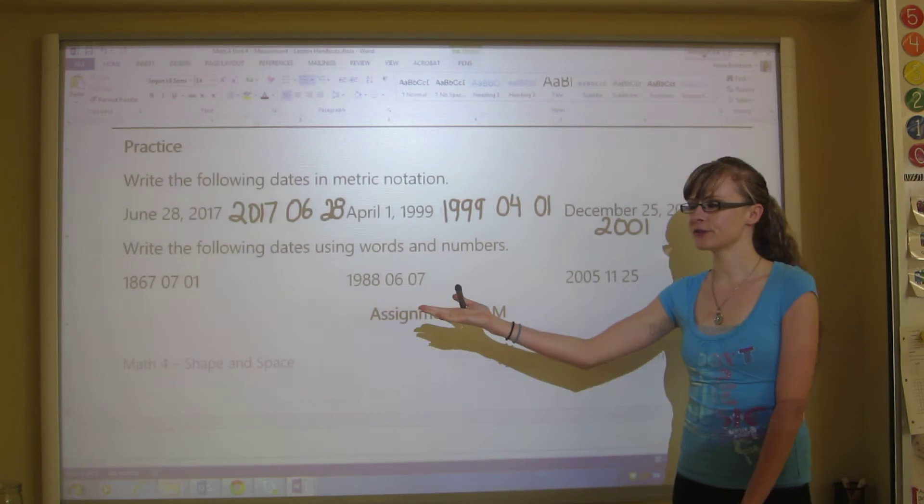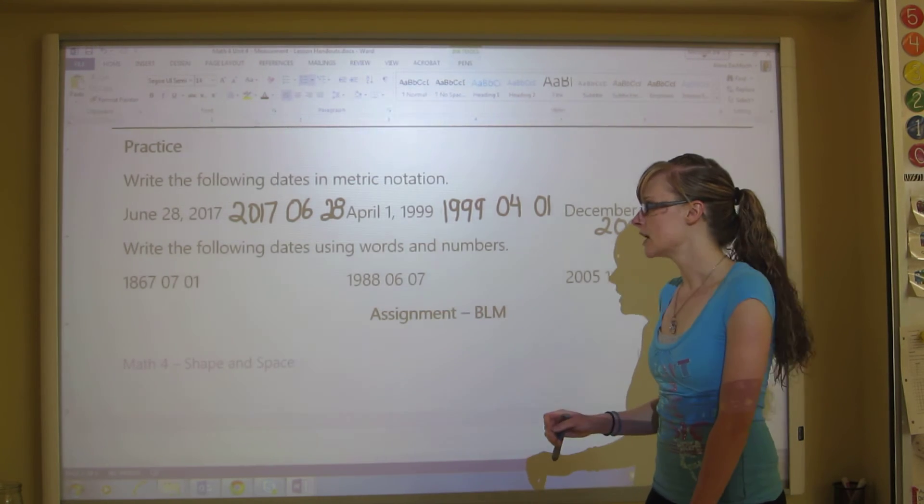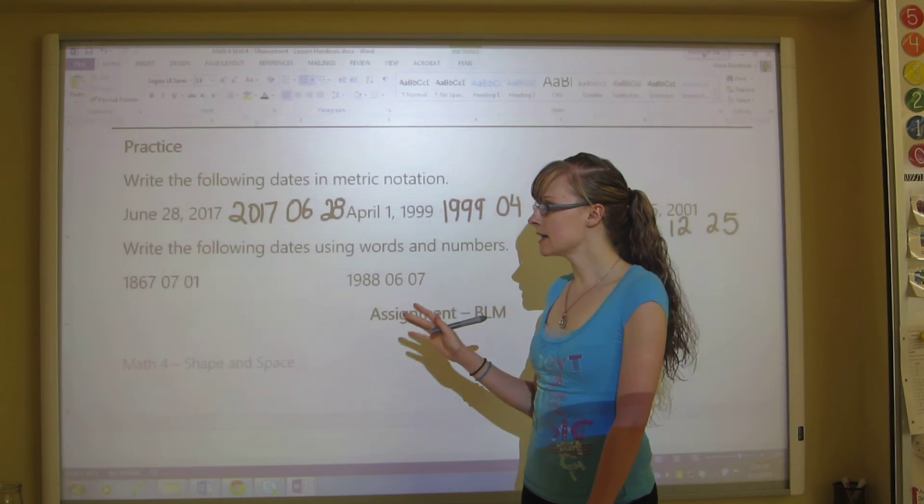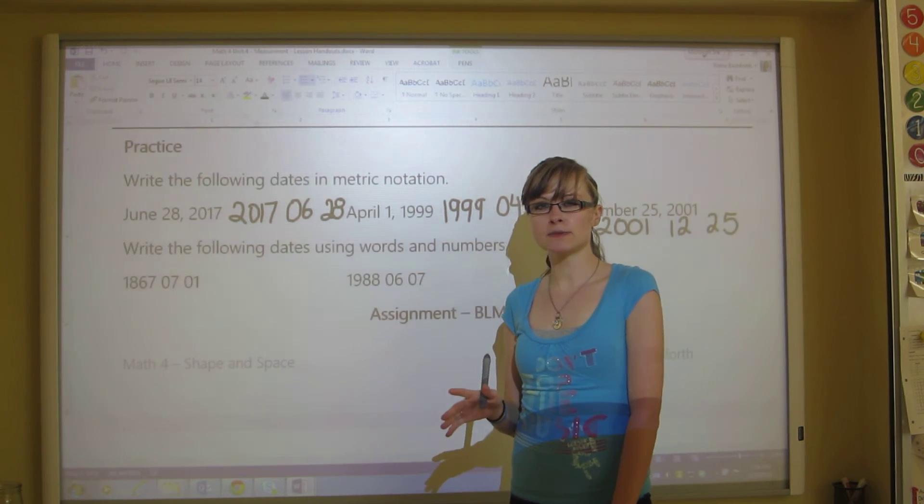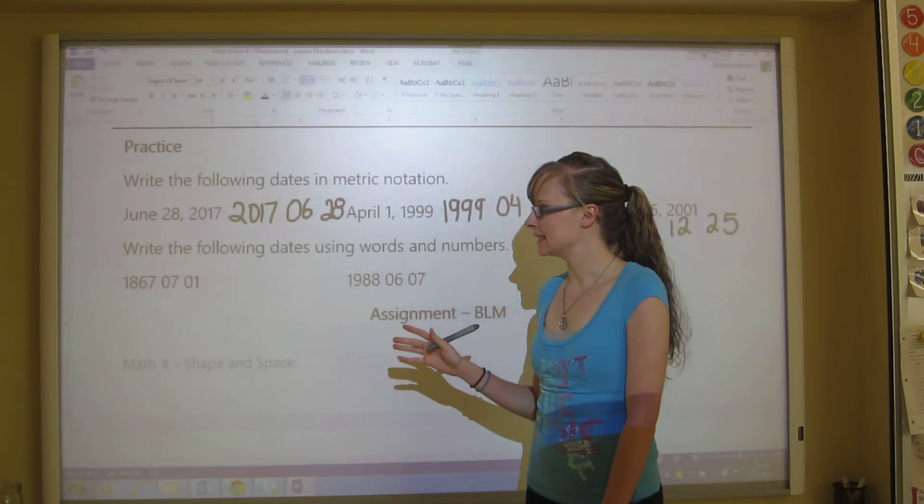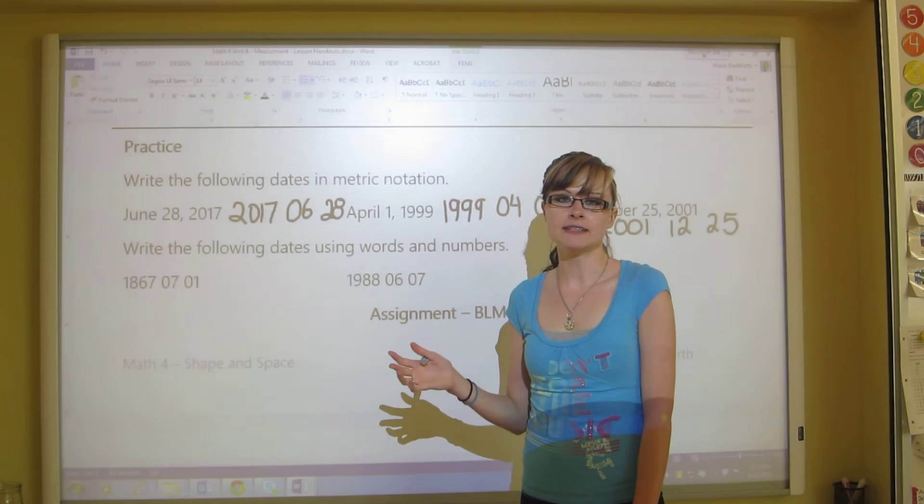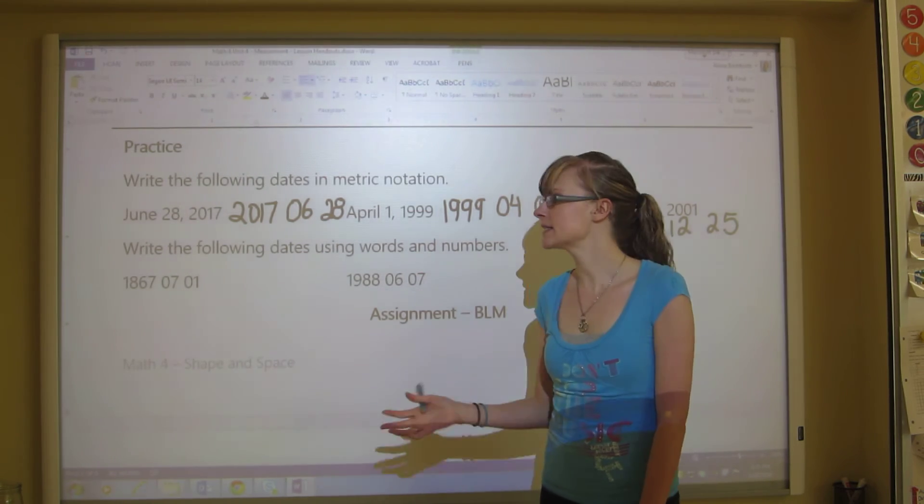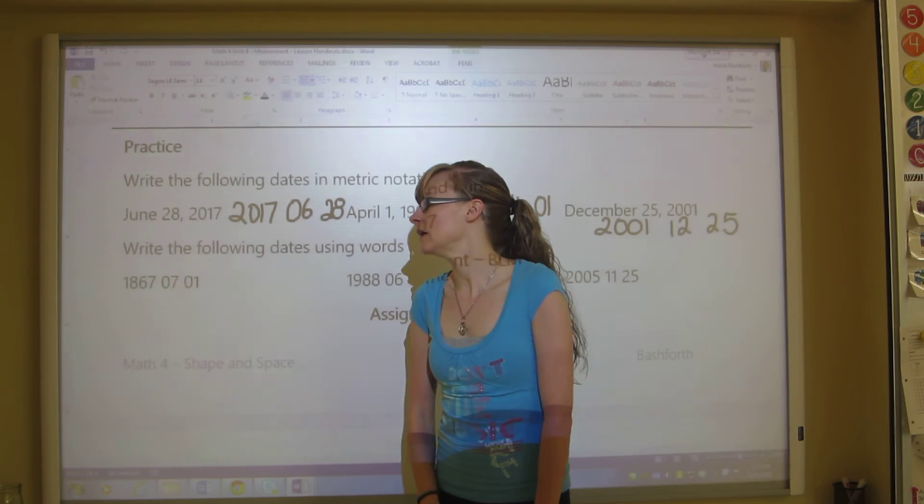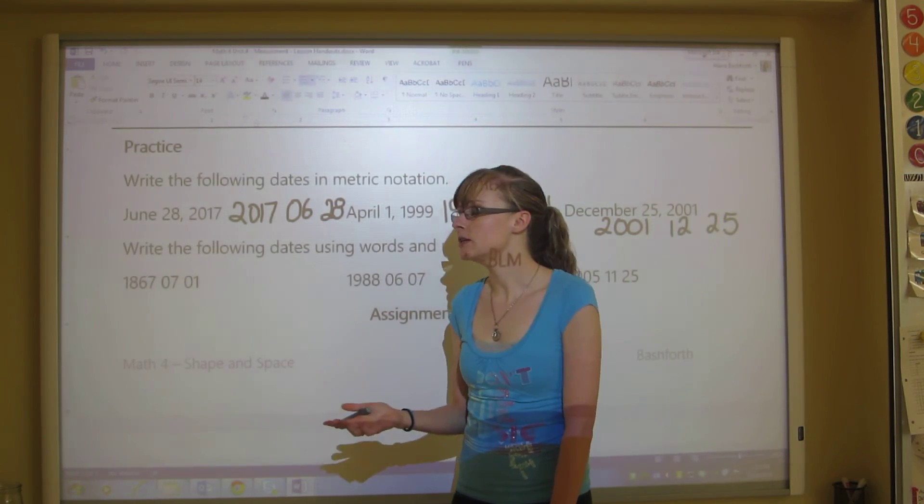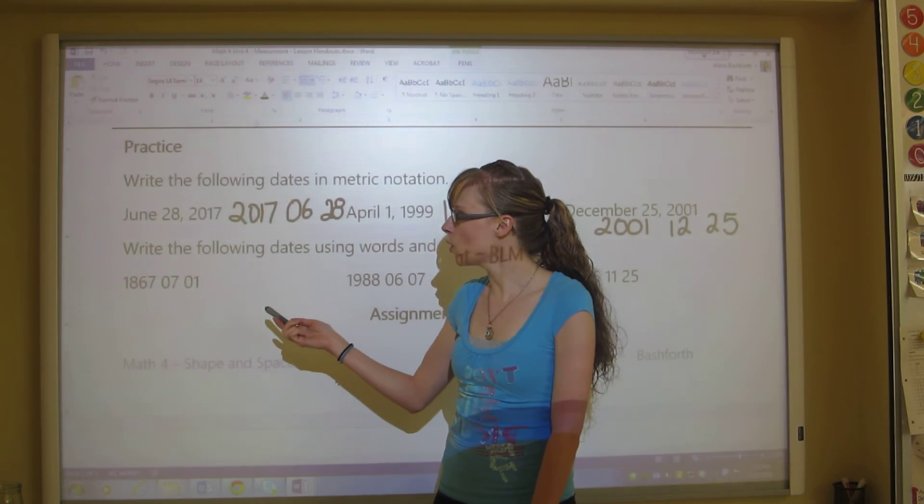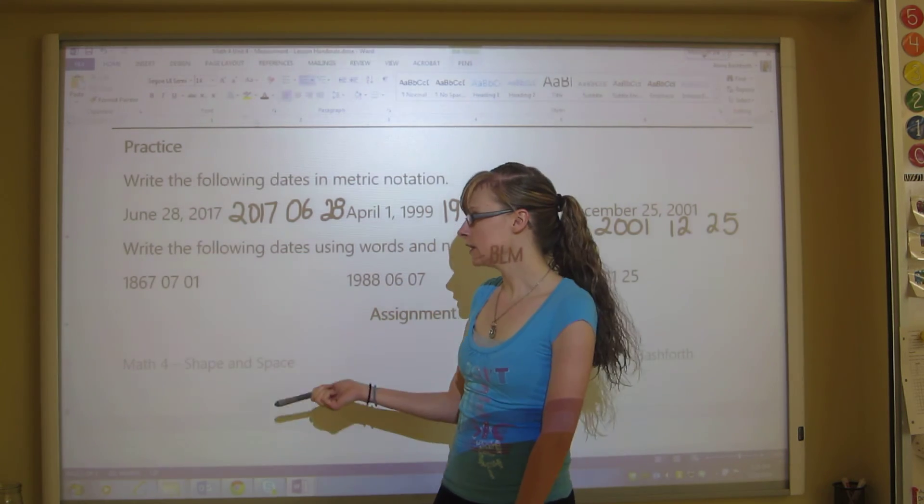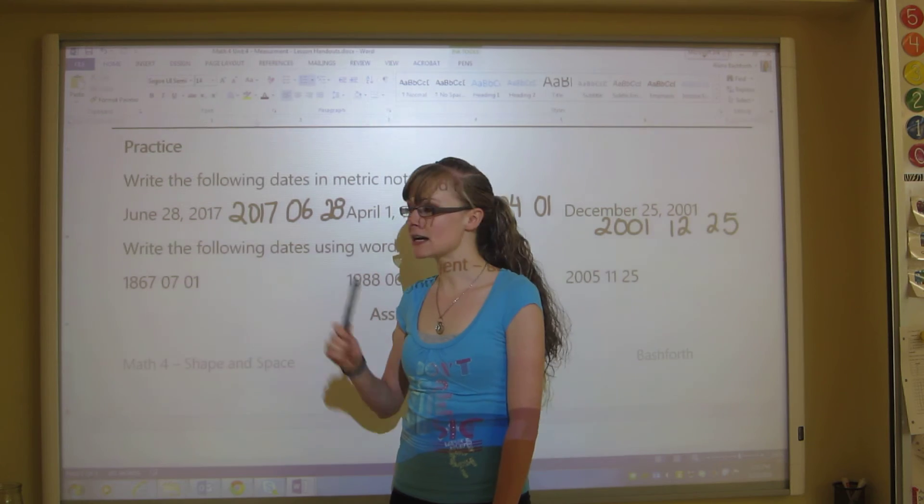Now, these are all in metric notation in your assignment. They might not be, you'll have to watch. But the year is always obvious when it has four digits. And then with the month, sometimes it's obvious because sometimes the date is past 12. So if it's like the date, if you have a 13 or higher, then you know that that's the date and the other one would be the month. But sometimes it's tricky. Like with this one, if I didn't say that it was in metric notation, you might not know if this is July 1st or if it is January 7th. But since it's metric notation, we know that this is the month and the last one is the day.